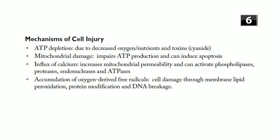Accumulation of oxygen-derived free radicals causes oxidative stress. Free radicals damage cells through membrane lipid peroxidation, protein modification, and DNA breakage. Free radical injury can be created by radiation exposure, drug metabolism, redox reactions, nitric oxide, transition metals, and leukocyte oxidative bursts. Reperfusion after anoxia also produces free radicals — this is why thrombolytic therapy has a window: if given too late after an ischemic stroke, the reperfusion injury is worse than doing nothing.